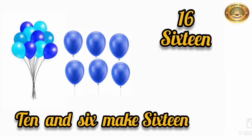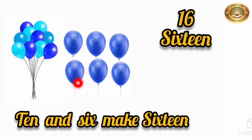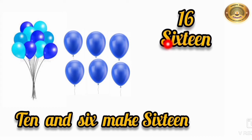The next number which comes after 15 is 16. 1 ten, and let's count these balloons: 1, 2, 3, 4, 5, 6. Here we have 6 more balloons. So children, 10 and 6 make 16. The spelling of 16 is S-I-X-T-E-E-N. 16.